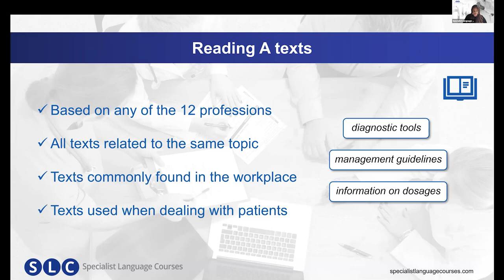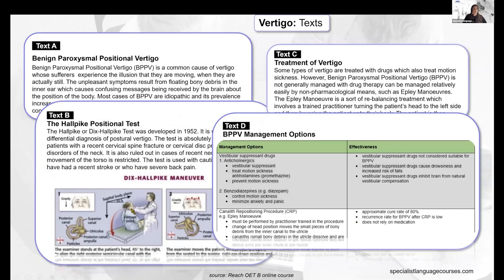Here we've got an example of the kinds of texts you might expect in OET Reading A. Each text is labelled with a letter — A, B, C, and D — and they are all on the same topic, in this case vertigo. You can see that we have running text, a diagram, and also a table. This is the layout you can expect in your Reading A.